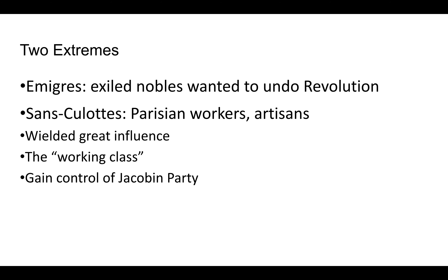On the other extreme, you have the most extreme members of the Jacobin party, known as the sans-culottes — a French word meaning 'without breeches.' Breeches were the garb of the higher classes, so the sans-culottes wore regular pants. They were the Parisian workers, the mob of people in the cities. There were a lot of them; they were poor, angry, and frustrated. As a result they wielded great influence and came to gain control of the Jacobin party, which would influence the French Revolution dramatically.